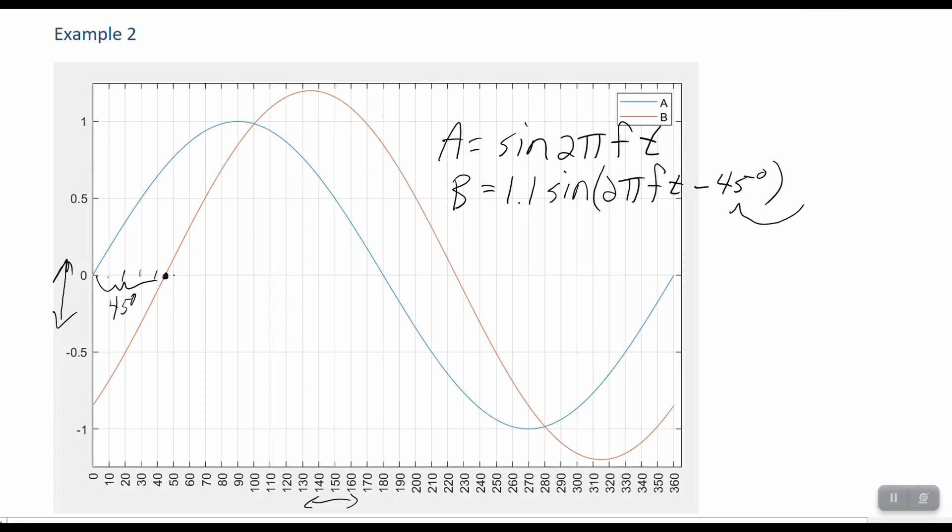But in reality, to make this equation work, that 45 degrees should be in radians, which would be pi over 4 radians. So in this case, A is leading B by 45 degrees, or by pi over 4 radians.